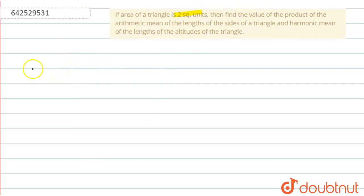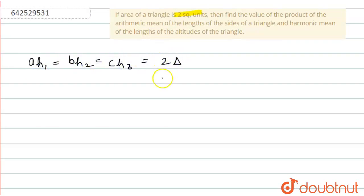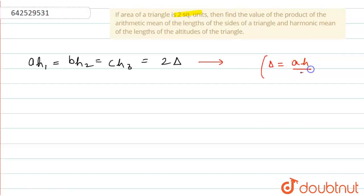So, first of all, we know that a·h1 = b·h2 = c·h3 = 2Δ, where a, b and c are the sides of the triangle and h1, h2, h3 are the lengths of the altitudes of the triangle. This formula has arrived from: Δ = a·h/2, so therefore 2Δ = a·h.